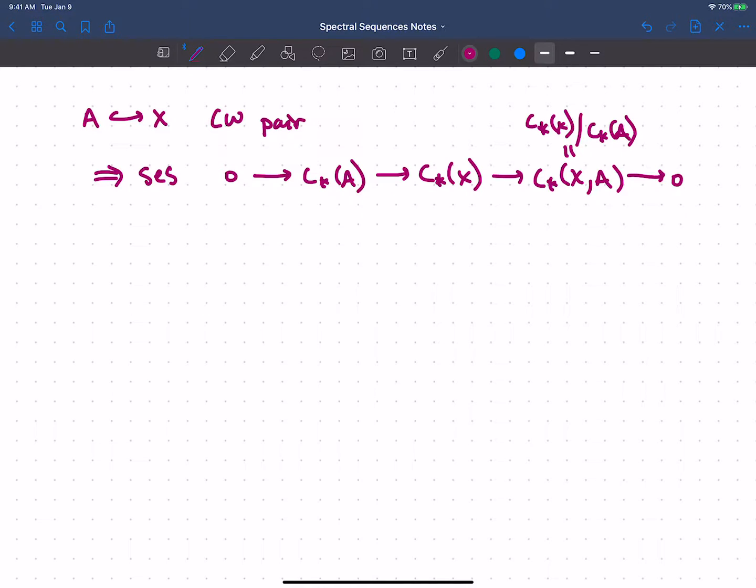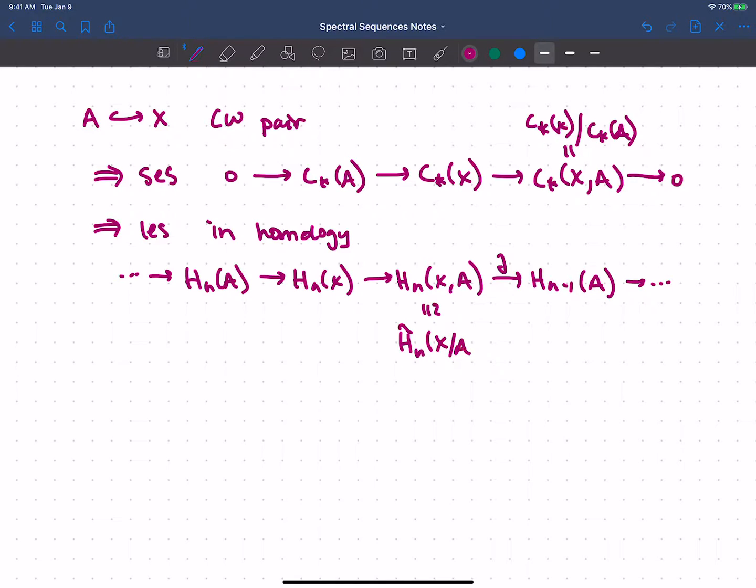And a short exact sequence of chain complexes is always going to give us a long exact sequence in homology via the snake lemma. So we get this long exact sequence in homology. That just looks like the nth homology of A maps to the nth homology of X, maps to the nth relative homology. And then we've got our connecting homomorphism to the n minus first homology of A and so on. And since we're working with CW complexes, we could use excision here to say this is really the homology or the reduced homology of X mod A.